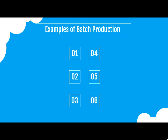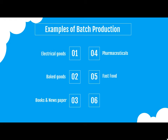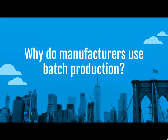Now we will see a few examples of batch production. Electric goods are an example of batch production. Similarly, baked goods, books and newspapers, pharmaceutical products, fast food products, and textile industries are all examples of batch production.